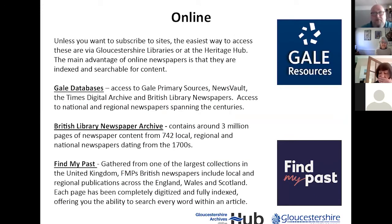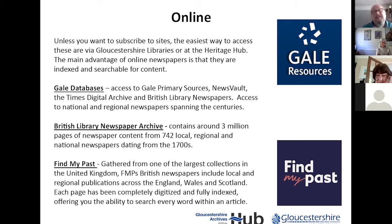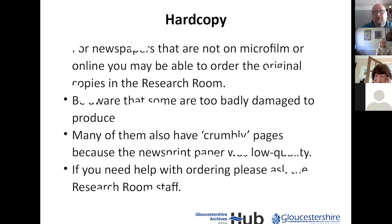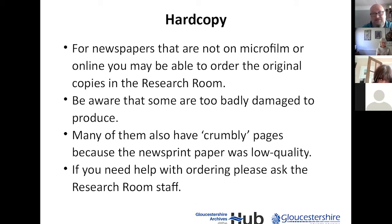Online is becoming far more popular. You can access them via Gloucester Libraries or the Heritage Hub. Gale databases give you access to the Times Digital Archive, and the British Library of Newspapers — like 3 million pages of newspaper from 742 local, regional, and national papers from the 1700s onwards. It's a fantastic resource, and also on Find My Past. For hard copies: some are not on microfilm, so you can order up the originals. Some are very badly damaged because of the crumbly paper and we just can't produce them. Most of these, thankfully, have been imaged elsewhere. Please don't shout at us if we can't get something out because it's too badly damaged.